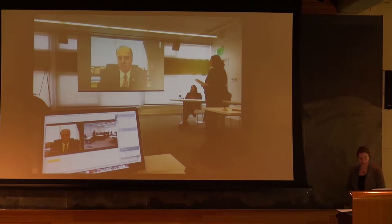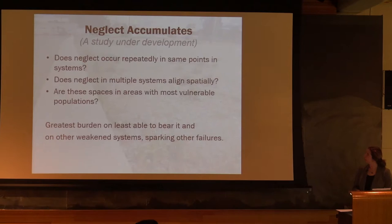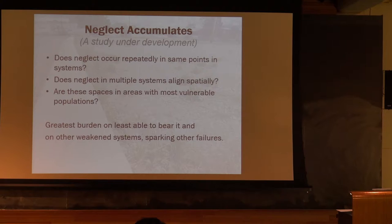Some of these conditions are unique to Flint, but a lot of them are quite common in older post-industrial cities. This brings me to the idea I'm calling 'neglect accumulates.' If the highest priorities always get the limited resources, do the same things always get left behind? Maybe neglect occurs repeatedly at the same points, again and again.